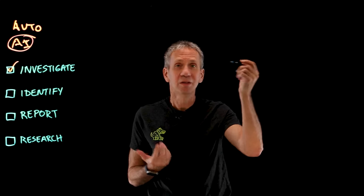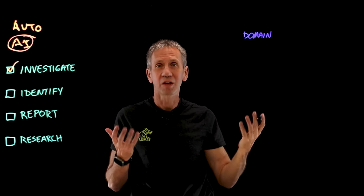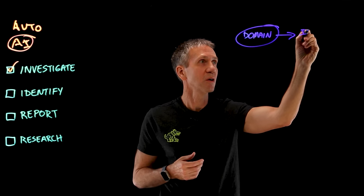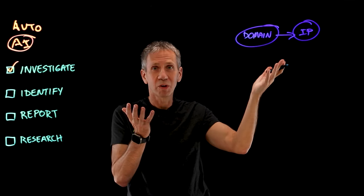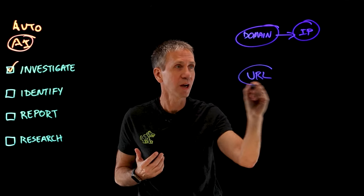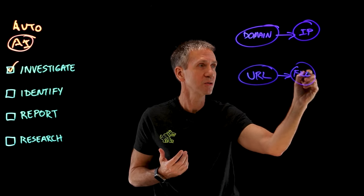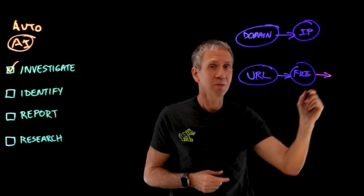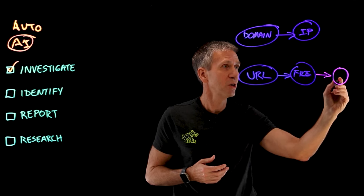To give you an example — let's say we have a domain, like the name of a web domain, and that domain resolves to a particular IP address. We might also have a URL — the actual link you type into your browser — and that links to a particular file on the file system. Now, if that file ends up pointing, through an AV signature — an antivirus signature — to malware, then this is information we can connect together.